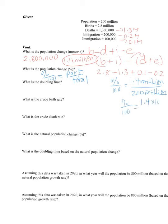You could also do this in scientific notation: 1.4 times 10 to the 6 over 200 times 10 to the 6. When I cross multiply and solve, I get 0.7%. So 0.7% is the population change. For doubling time, it's the rule of 70: 70 divided by 0.7 gives a doubling time of 100 years.